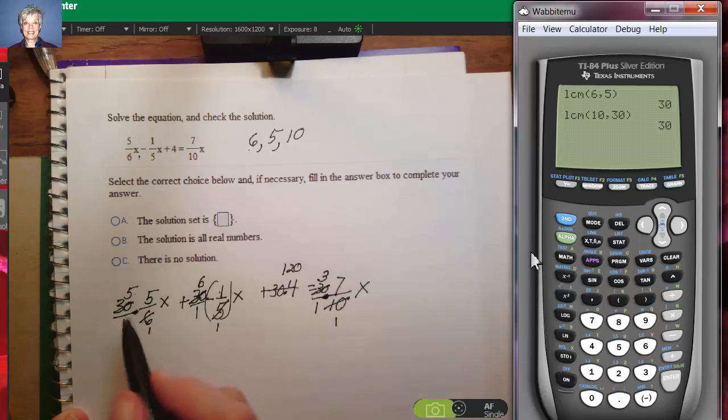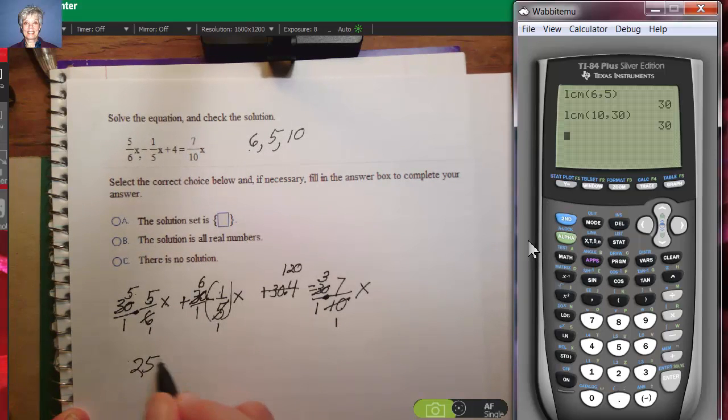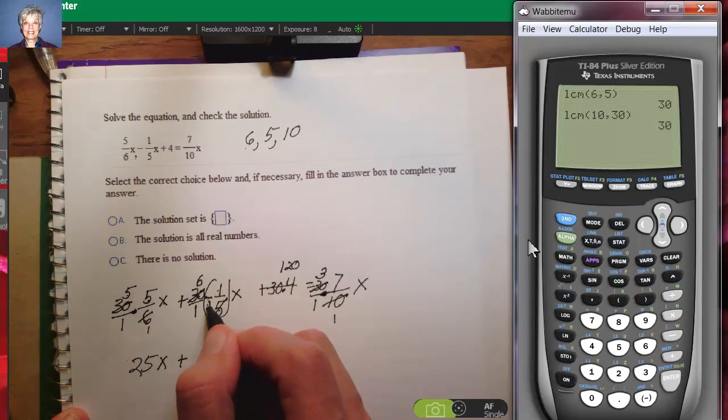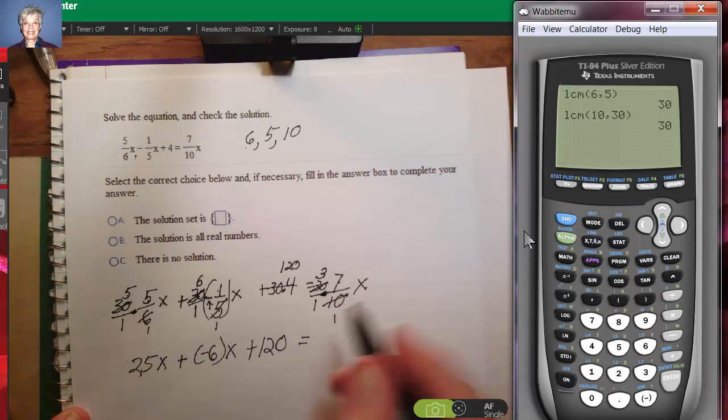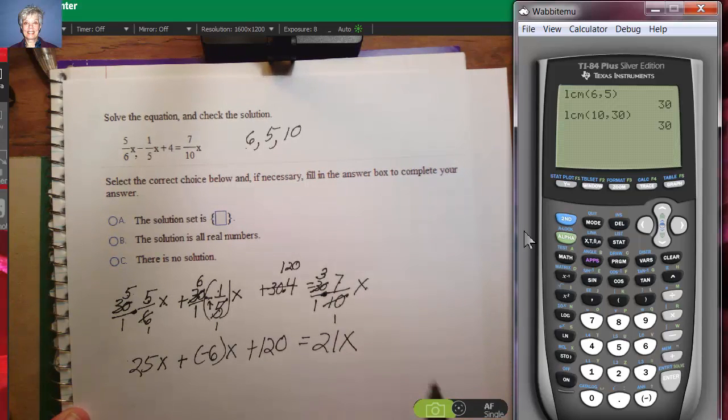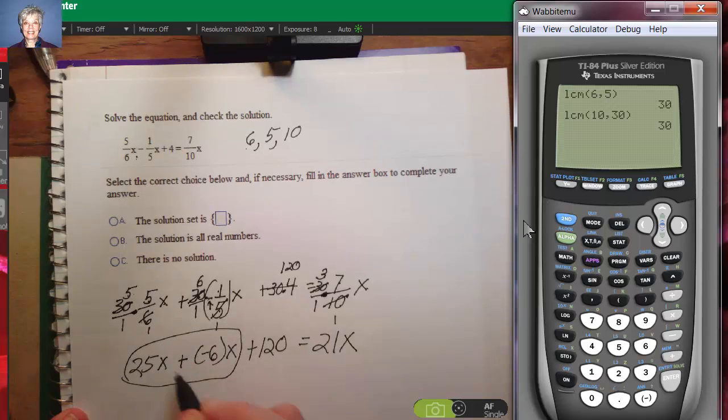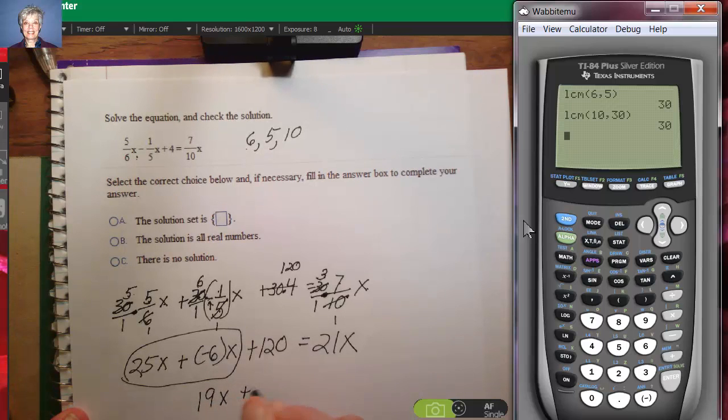So now, I have 5 times 5 times x all over 1, so it's 25x plus 6 times negative 1, don't forget your negative. 6 times negative 1 is negative 6x plus 120 equals 3 times 7 times x is 21x. On the left side, I'm not going to move any terms yet. I'm going to get these two like terms together, 25 plus negative 6 is 19. I'll have 19x plus 120 equals 21x.